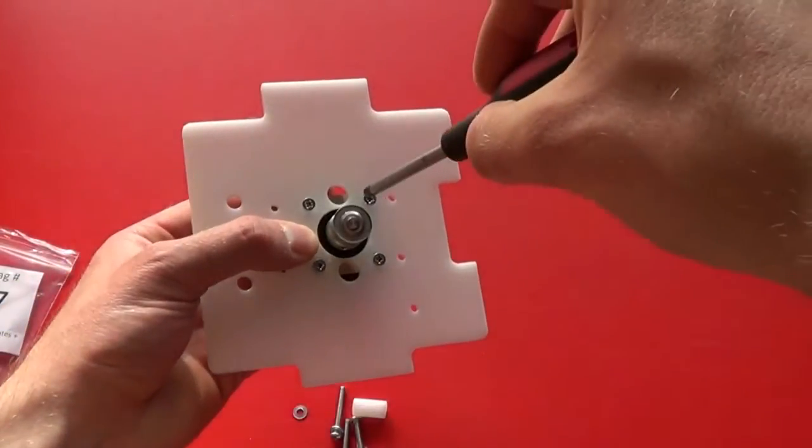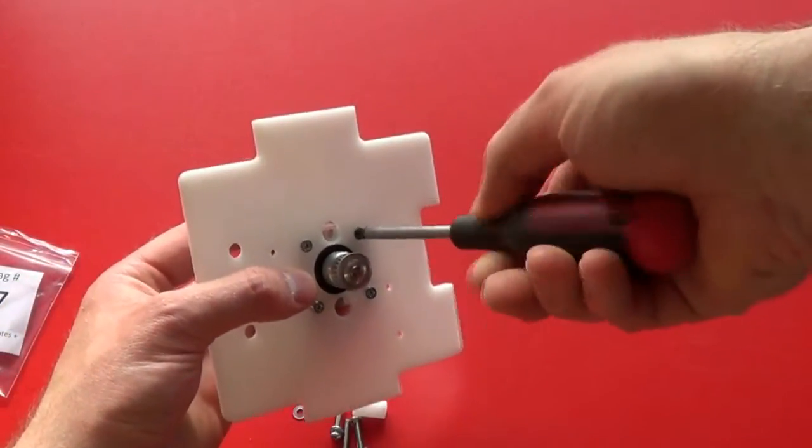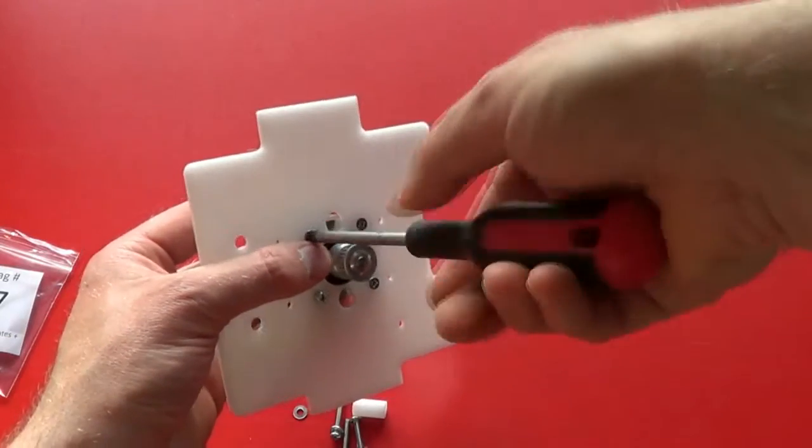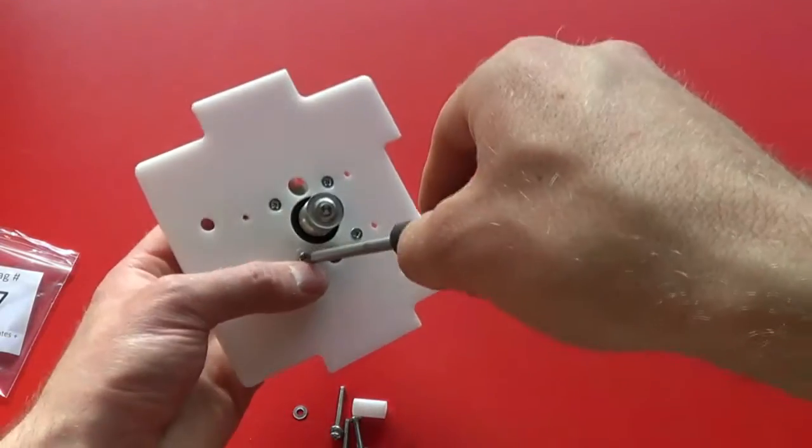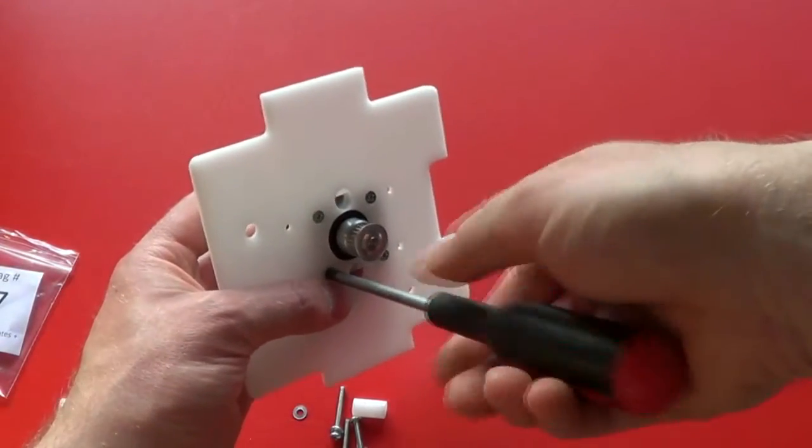Use the POSI-1 screwdriver to tighten them. Again, take care not to over-tighten in case you strip threads on the motor face.